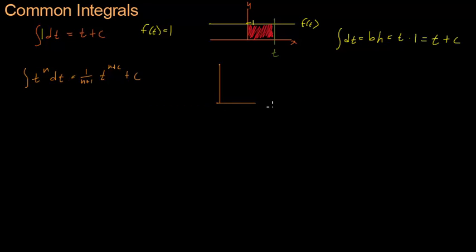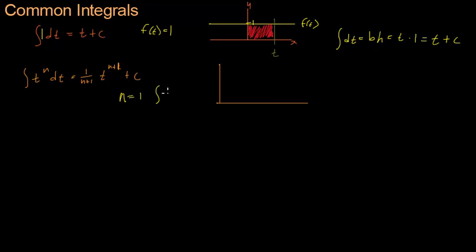So let's do this again. I talked about this integral of t to the n, dt, equals 1 over n plus 1, times t to the n plus 1, plus c. I'm going to cover a specific instance of this and take a look at when n equals 1. So when n equals 1, we're going to get the integral of t dt. This is t to the 1 power, which is just t.